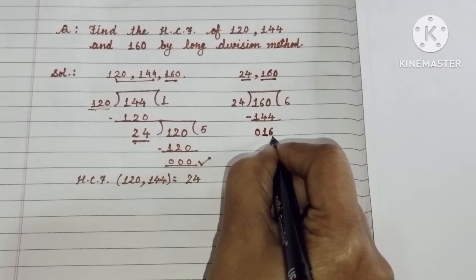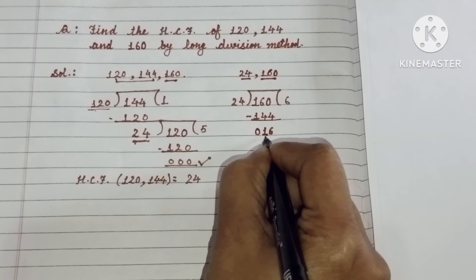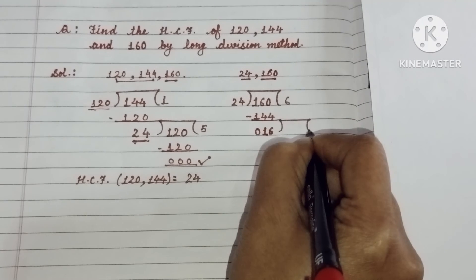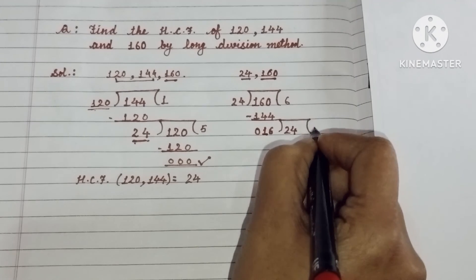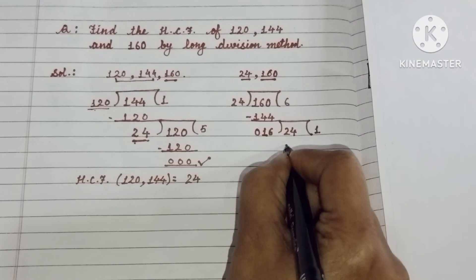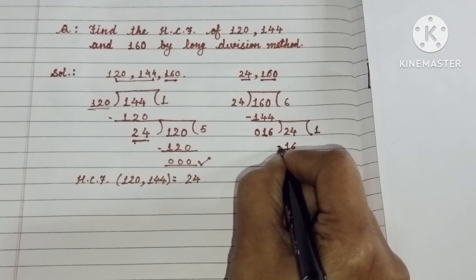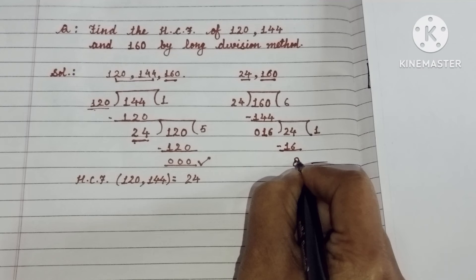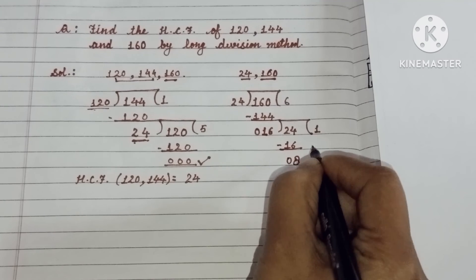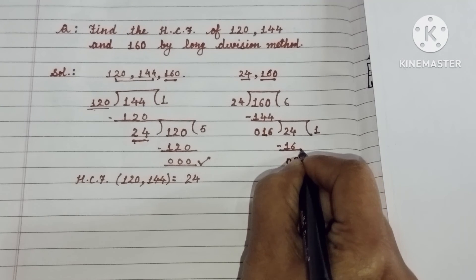Now this remainder will become the new divisor. Ab ye number kya banjayega bita? Divisor. And this 24 will become the new dividend. Clear? So 16 ones are 16. Now subtract the number 16 from 24. So 14 minus 6 is 8. And 1 minus 1, 0. Clear bita?